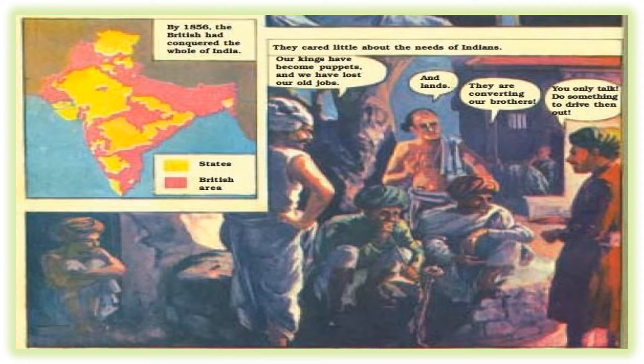Here is a scene where, in the night-time, the people of a village are sitting hopelessly and discussing their fate under British rule. The first man says: 'Our kings have become puppets and we have lost our old jobs.' All the kings have been conquered by the Britishers and now behave like their puppets. We have also lost our old jobs — the jobs we inherited from our ancestors, such as weaving clothes, making utensils, and mending shoes.